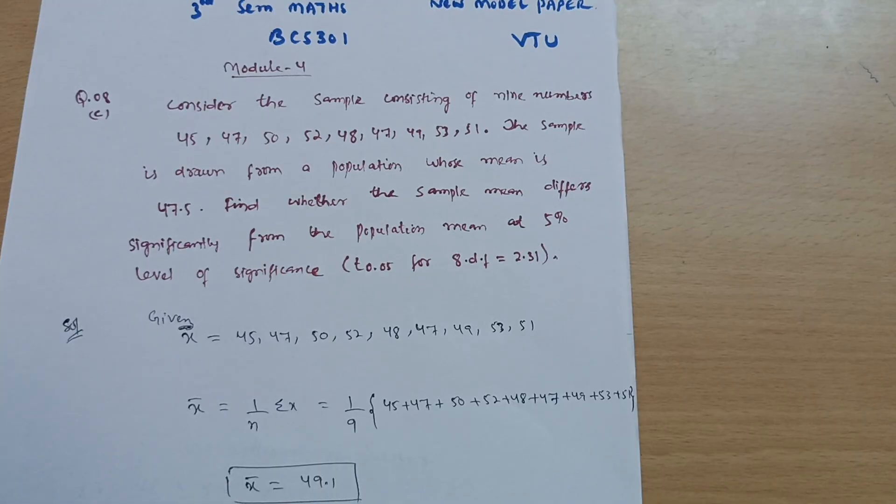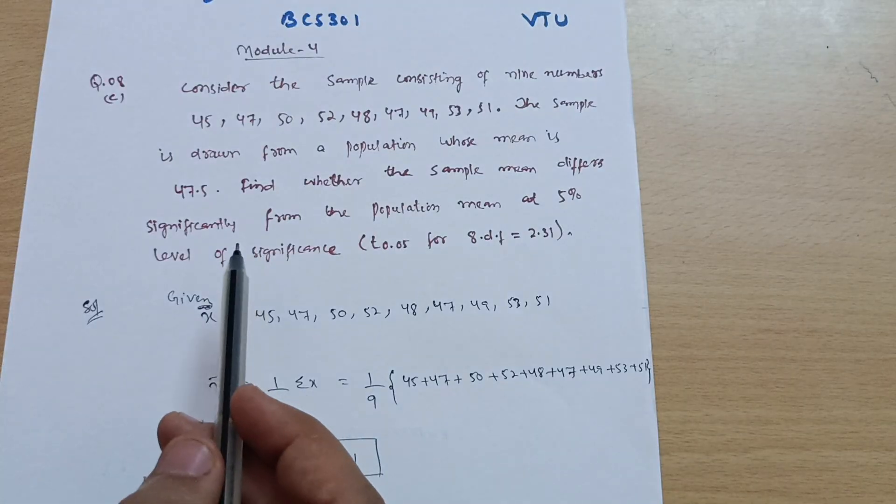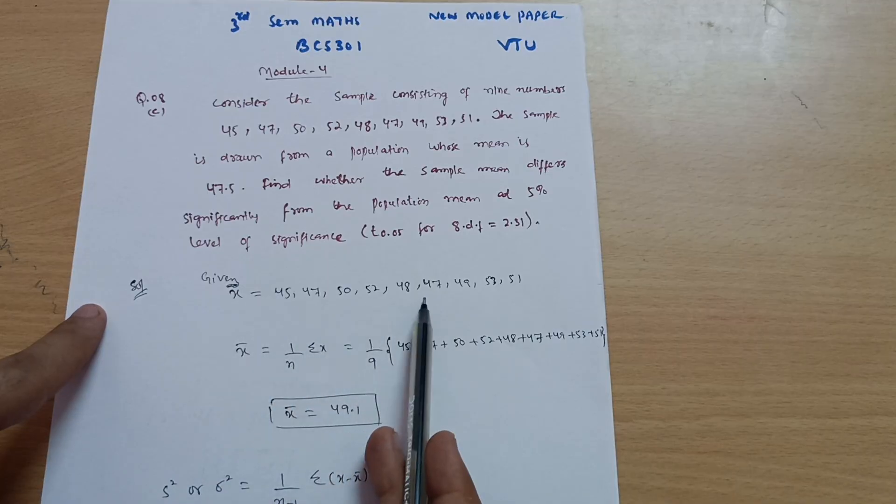So first of all, write down the given data. Suppose I will call it as X. So X is equal to 45, 47, 50, likewise. I'm calling it as X.